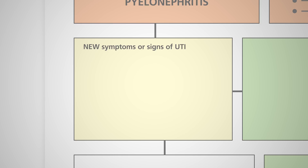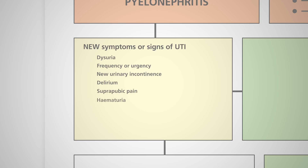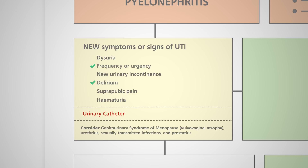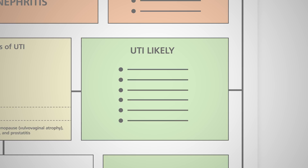Signs and symptoms of UTI include new onset of dysuria — pain on passing urine — frequency or urgency, needing to pass urine more often or in a hurry, new urinary incontinence, delirium or new confusion or agitation, suprapubic pain in the lower tummy, and haematuria — blood visible in the urine. If a urinary catheter is present, check the catheter is draining and consider removing or changing it if blocked. If there is new dysuria or any two of the other signs or symptoms, consider starting antibiotics for a UTI according to local antibiotic guidelines. Always try to obtain a urine sample in older people prior to starting antibiotics, as they are at high risk of resistant infections.